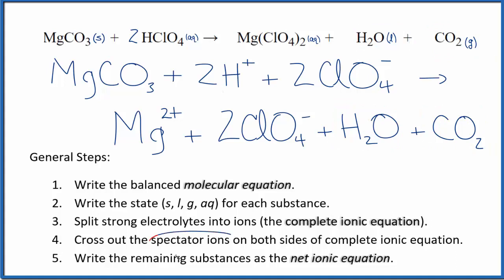Now we can cross out spectator ions. They're on both sides of the complete ionic equation. They haven't changed, so we have two of these perchlorate ions in the reactants and in the products. These are spectator ions we can cross them out.